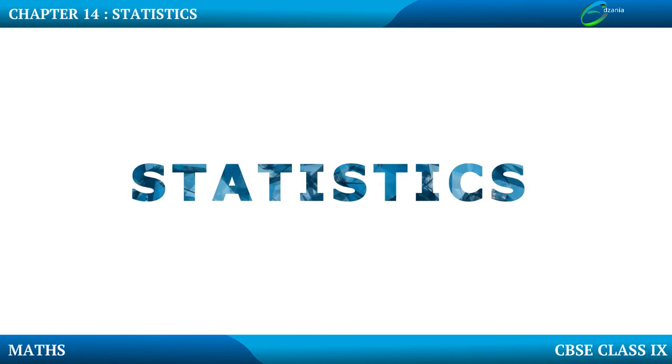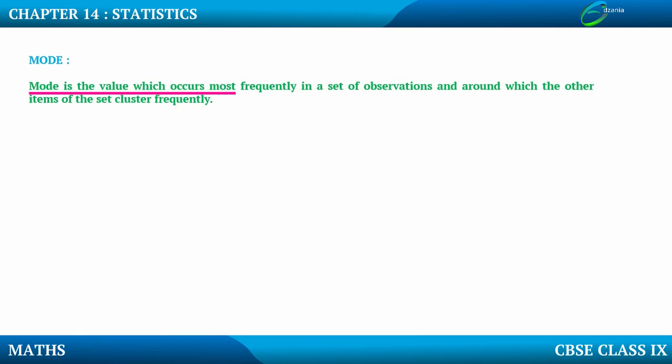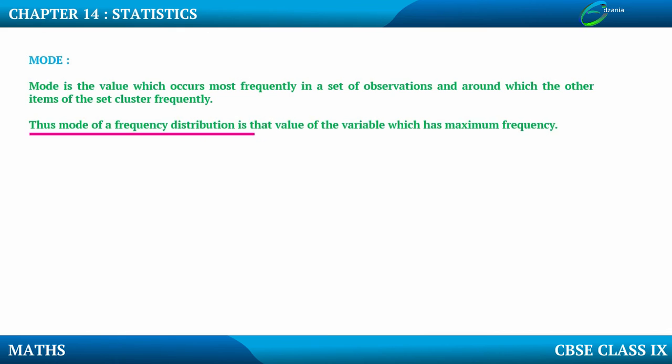Statistics. So the next measure of central tendency is mode. Mode is the value which occurs most frequently in a set of observations and around which the other items of the set cluster frequently. So mode of the frequency is that value of the variable which has maximum frequency.